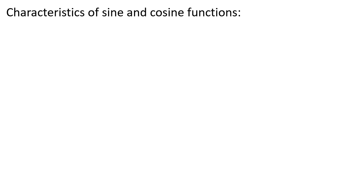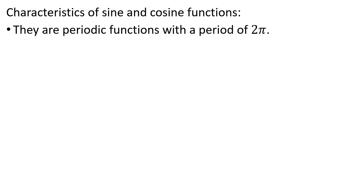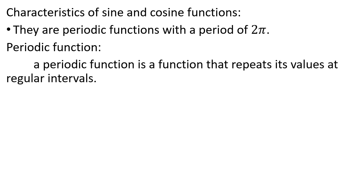Sin and cos functions are periodic functions with a period of 2pi. What is a periodic function? A periodic function is a function that repeats its values at a regular interval. If you have a periodic function, the value will repeat again and again in a regular interval.